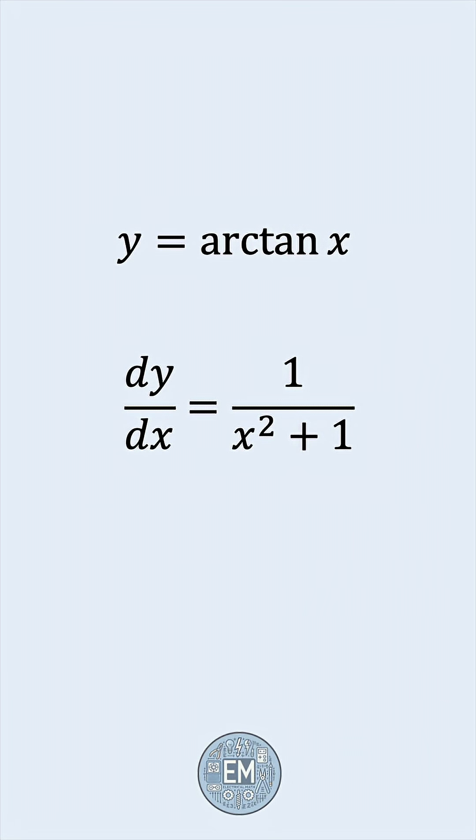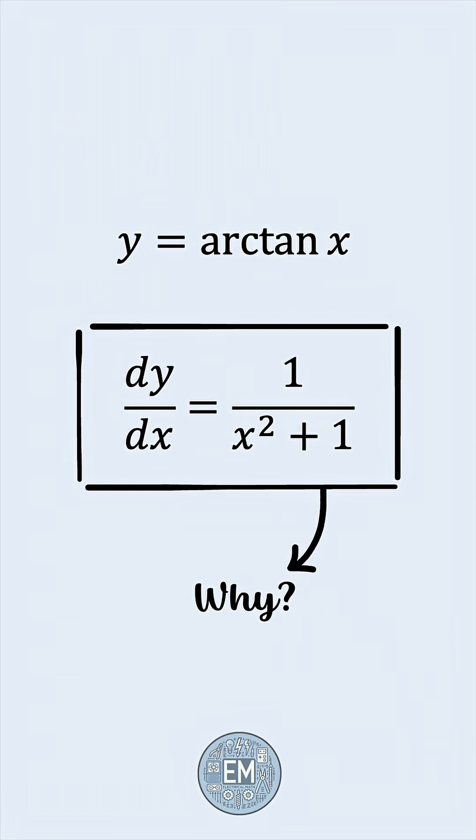We know that the derivative of the arctan function is 1 over x squared plus 1. But why is that the case? Let's prove it.